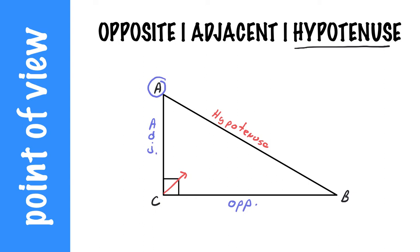Adjacent is a fancy mathematical word simply meaning beside or next to. So adjacent means beside or next to.